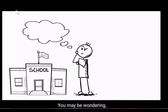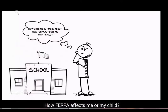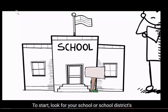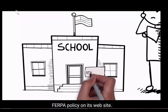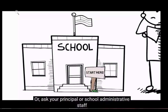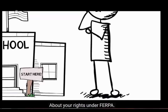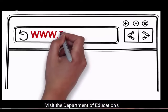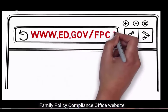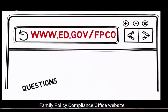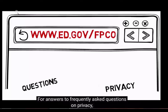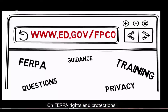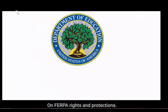You may be wondering, how do I find out more about how FERPA affects me or my child? To start, look for your school or school district's FERPA policy on its website, or ask your principal or school administrative staff about your rights under FERPA. Visit the Department of Education's Family Policy Compliance Office website for answers to frequently asked questions on privacy, training, and guidance for parents and students on FERPA rights and protections.